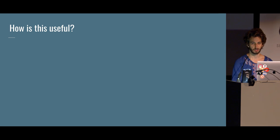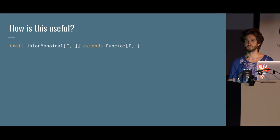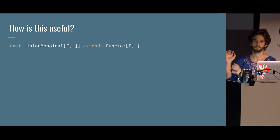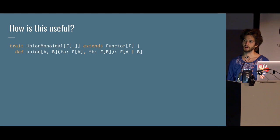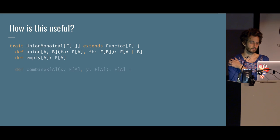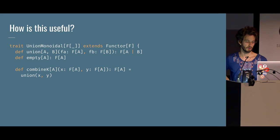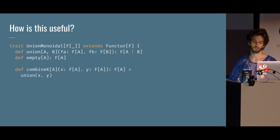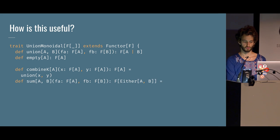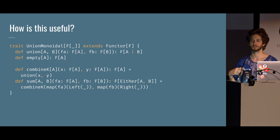Thinking algebraically leads you to experiment with new designs. We could imagine a UnionMonoidal type class where we take F[A] and F[B] and return F[A | B], with an empty. We can derive combineK from it: if A and A are taken, the union of A and A is just A in Dotty, giving us F[A]. We could also derive sum by mapping to left and right. Learning about these concepts leads you to experiment with new designs.